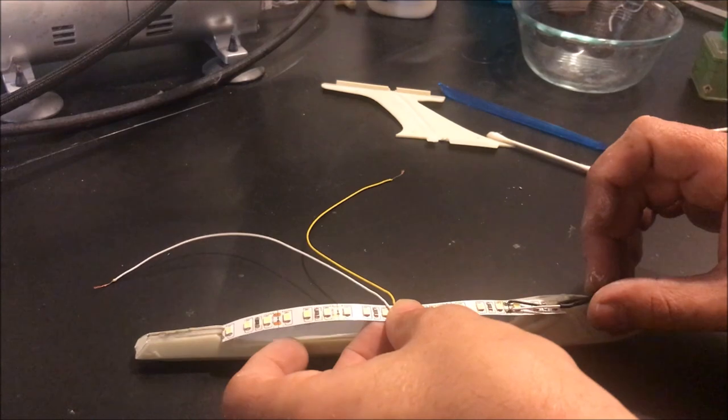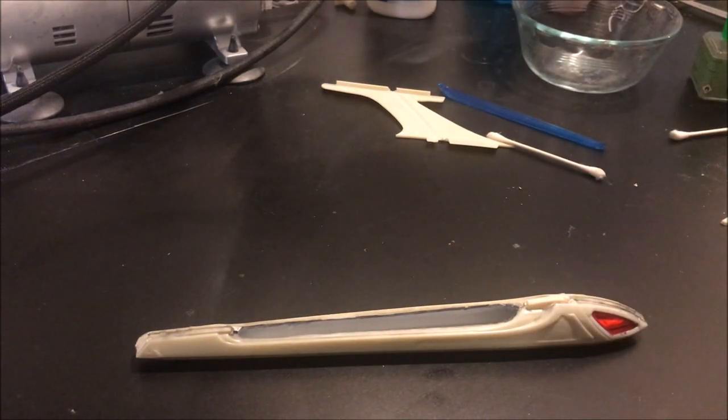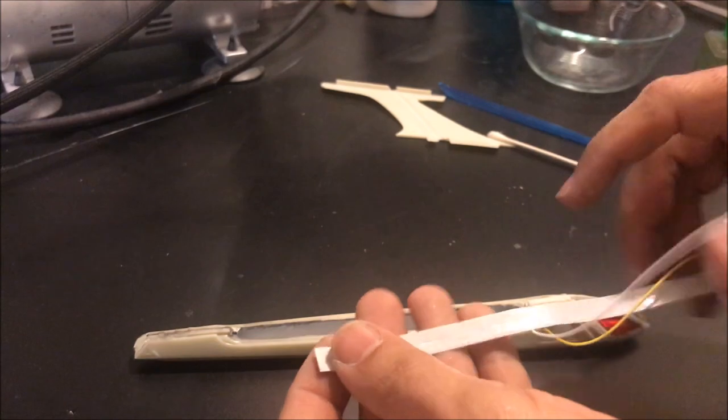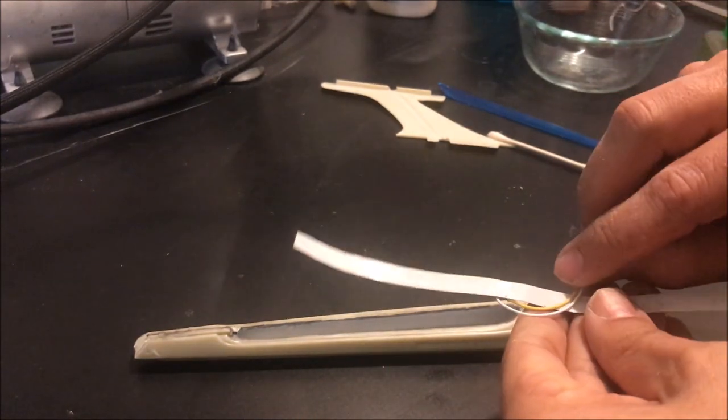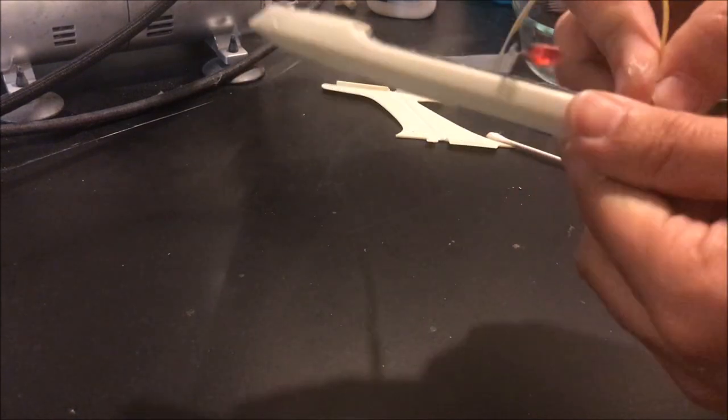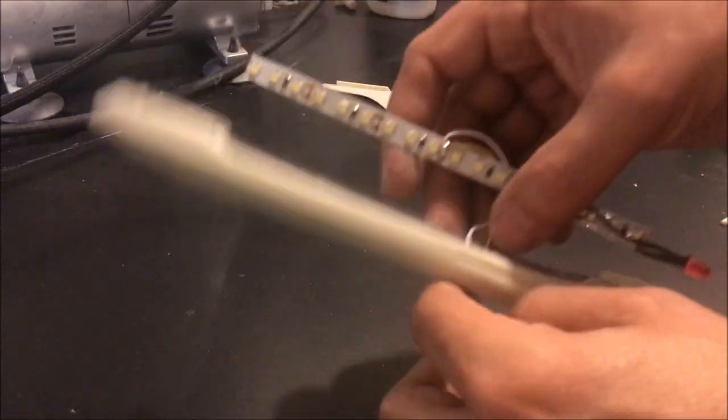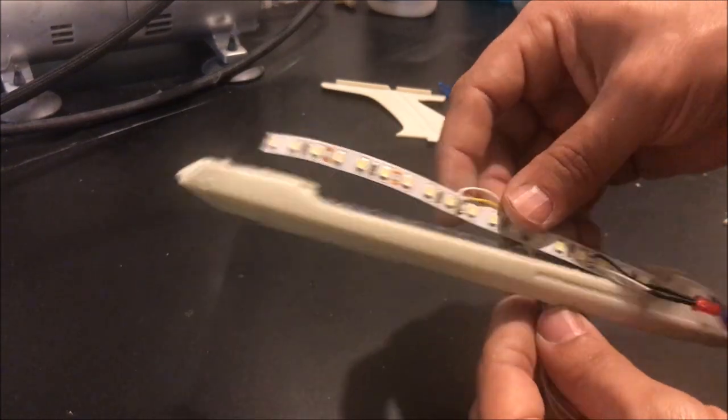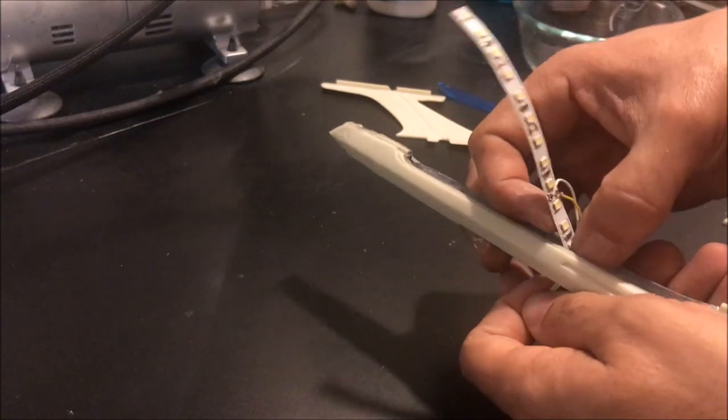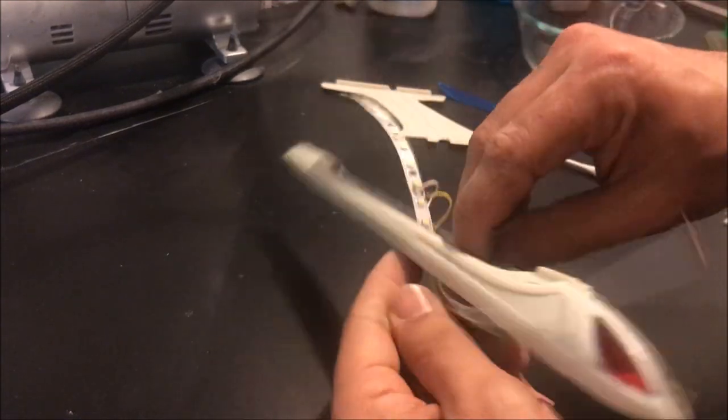Okay, we're going to size things up, then we're going to remove the adhesive on our LED strip. Now it's time to feed those wires down and out of the nacelle, paying attention to try and keep them right by that mark that we just made. Then we're going to press that LED strip down just right in the middle of our nacelle.